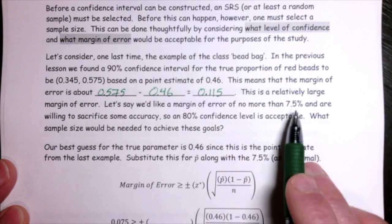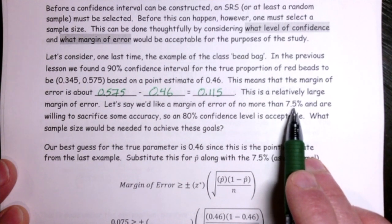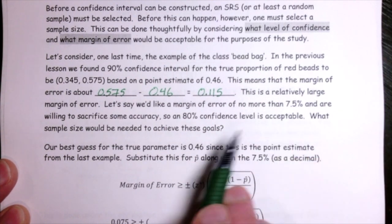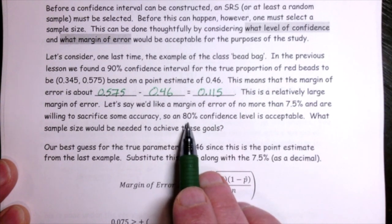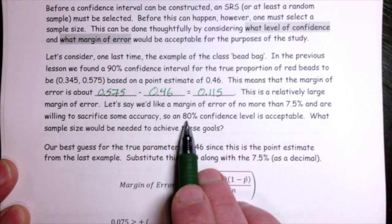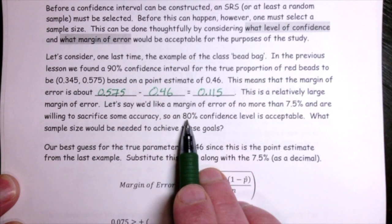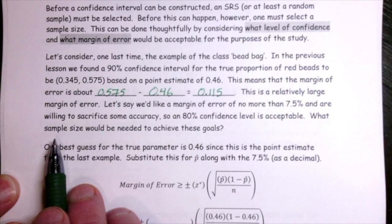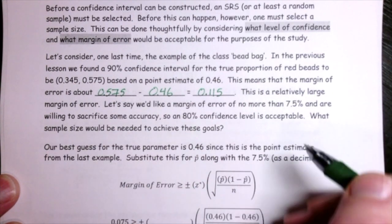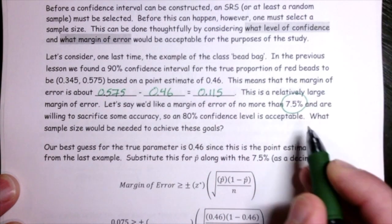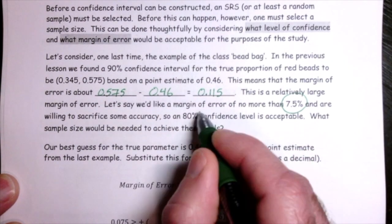Let's say we're willing to sacrifice some accuracy, so an 80% confidence level is acceptable. Changing our margin of error to 7.5% will require a larger sample size, so we'll balance that by lowering the level of confidence, which lowers the critical value and gives a slightly narrower interval. Our job is to decide what sample size is needed to achieve these goals — the desired margin of error and the level of confidence.